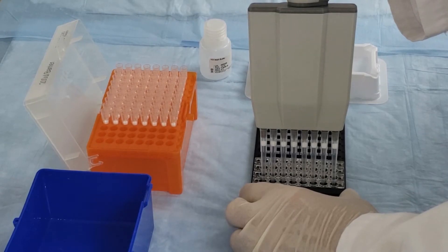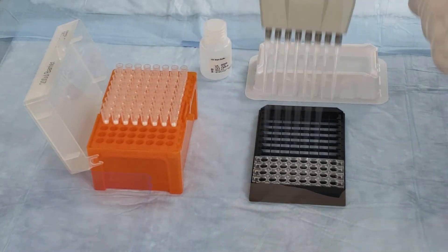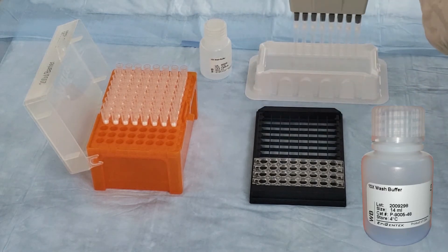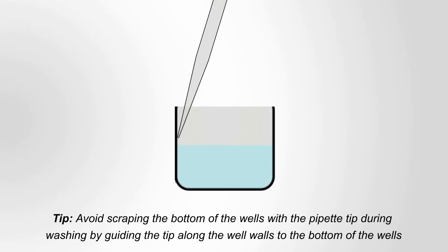Discard the binding solution from each well. Then, remove unbound RNA by pipetting 150 microliters of diluted wash buffer into and then out of the wells. Repeat this wash step two more times for a total of three washes. Avoid scraping the bottom of the well surface by guiding the pipet tip along the side of the well toward the base.